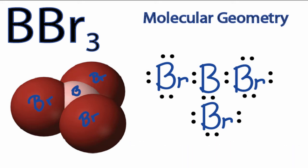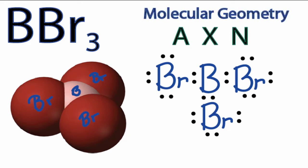We can also use the AXN notation to check that and make sure we have the right molecular geometry. A is the boron in the center of the structure. X is the number of atoms attached to that boron - we have three bromine atoms, so it's a three. And N is the number of non-bonding electron pairs. All of the electrons around the boron are involved in chemical bonds, so we can just forget about N.